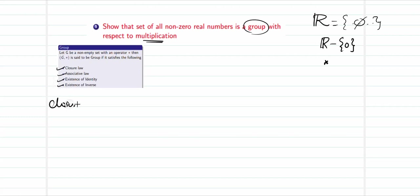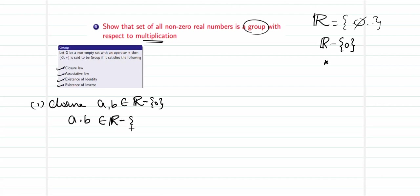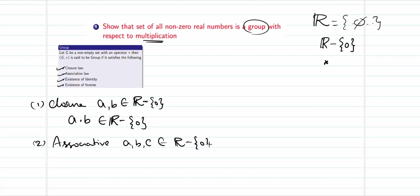For closure: when I pick two elements a and b that belong to R minus {0}, their product ab also belongs to the set of real numbers. Since a and b are both non-zero, their product is also non-zero and belongs to R minus {0}. Hence closure is true. For associativity: for any three elements a, b, c in R minus {0}, (a·b)·c = a·(b·c), so the associative law holds true.